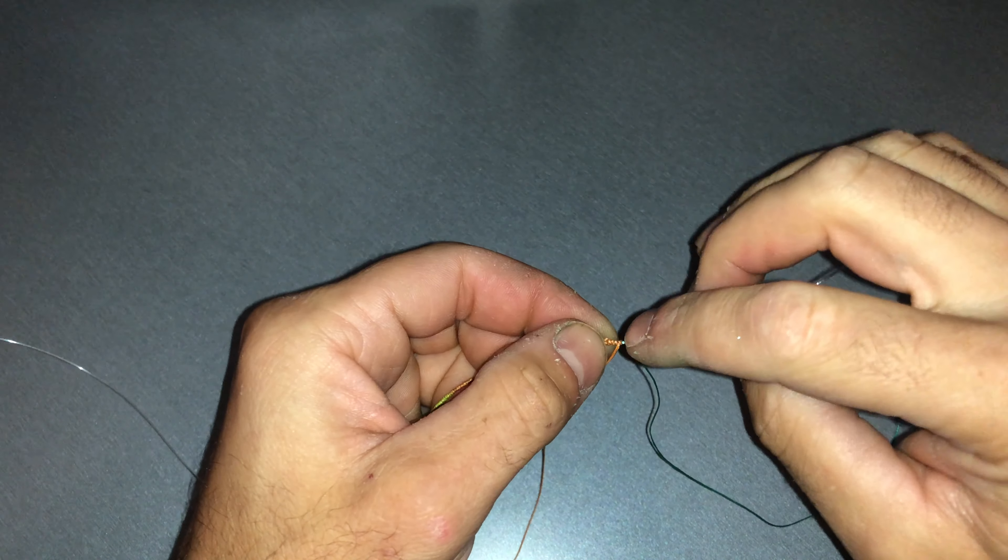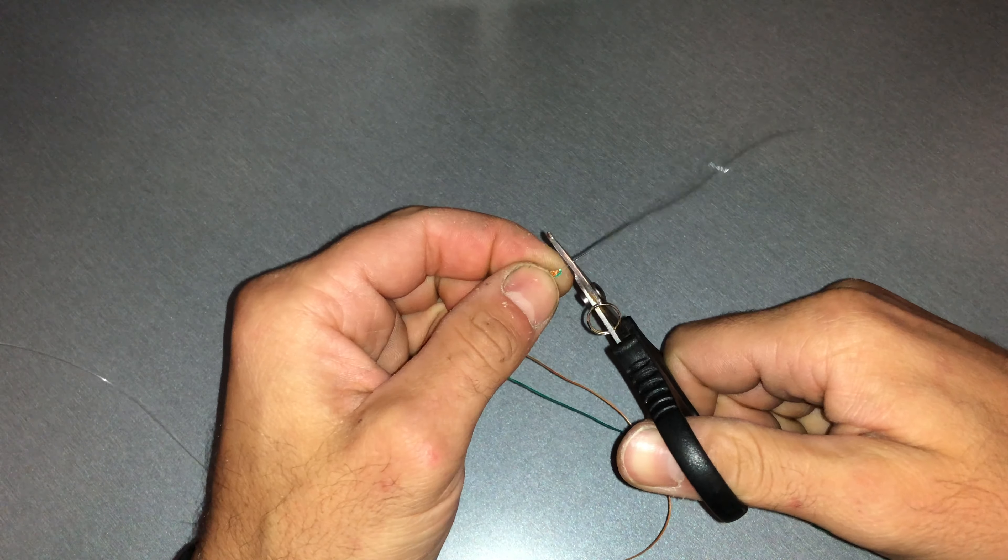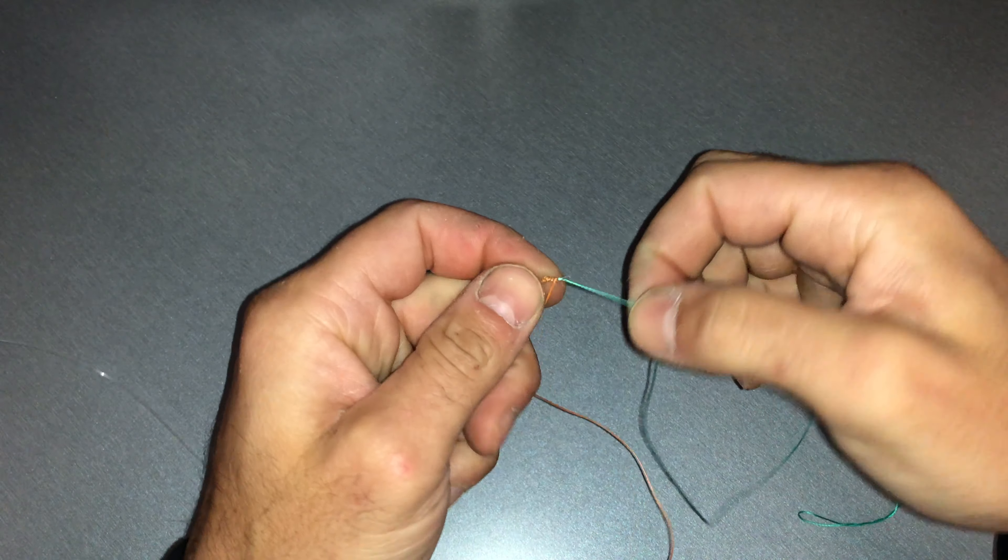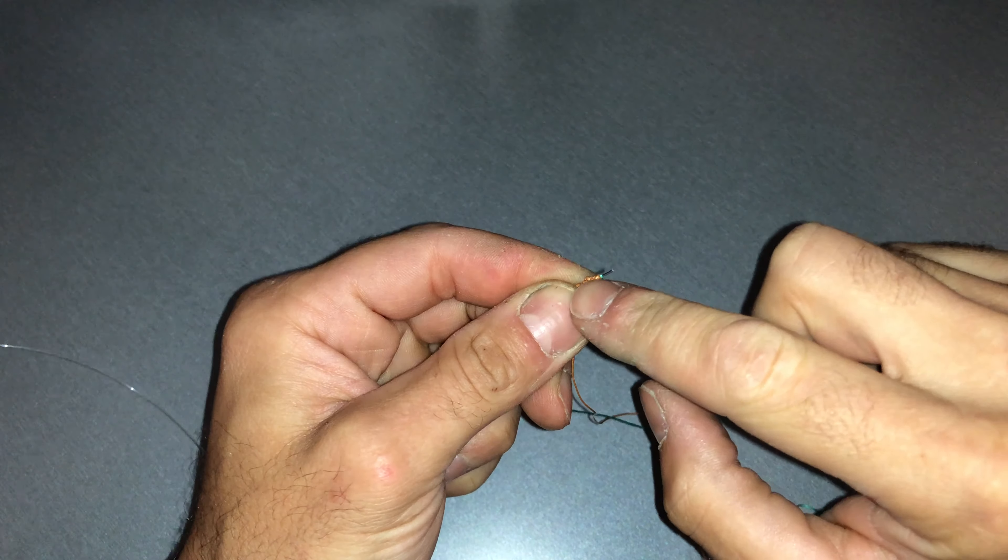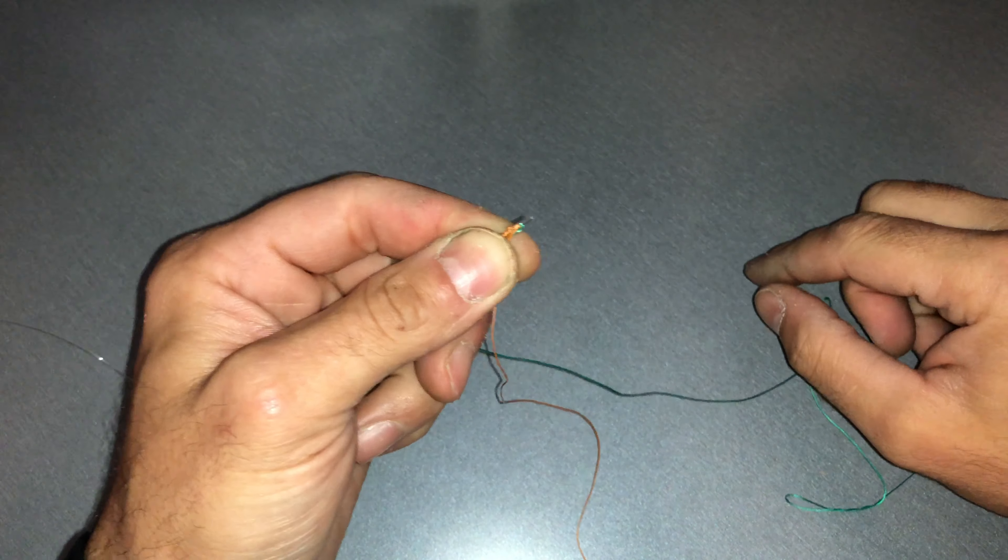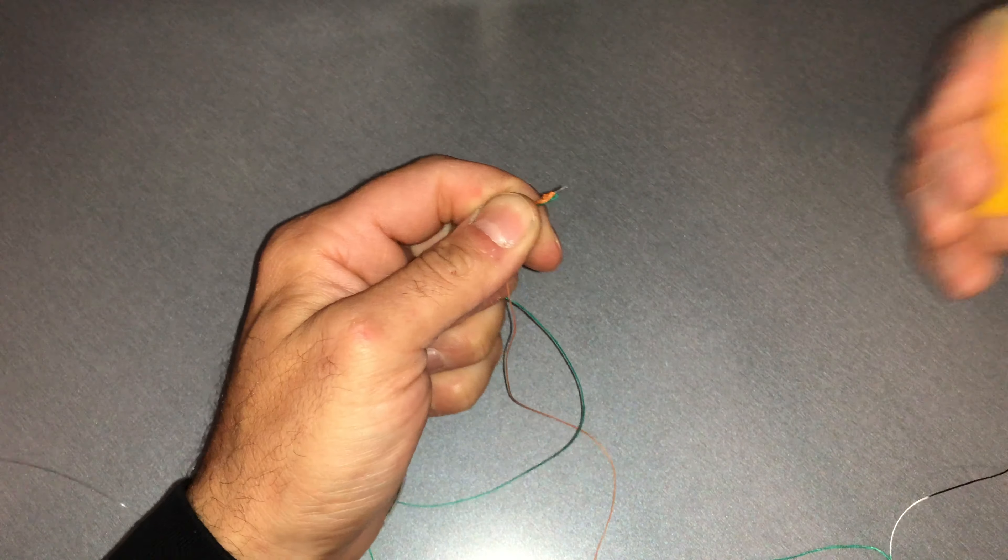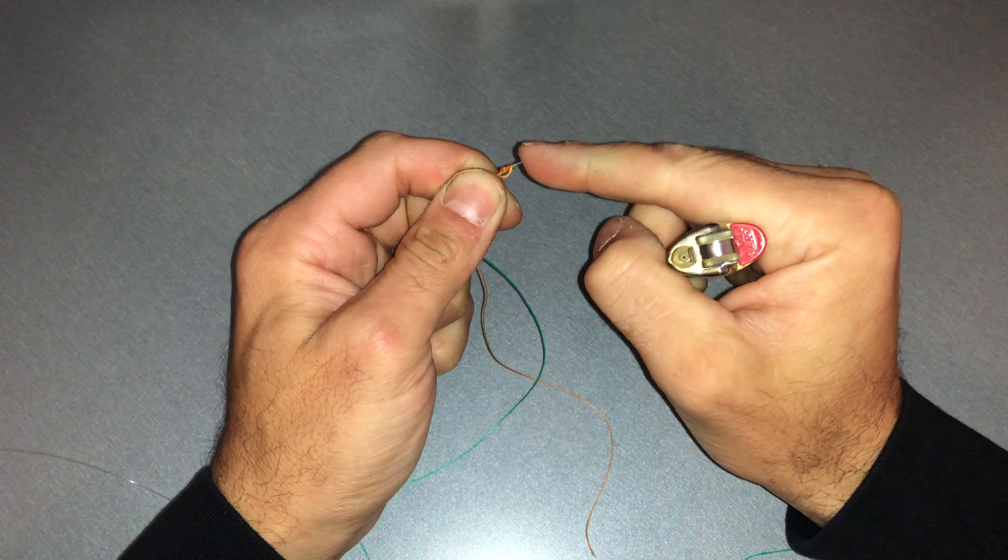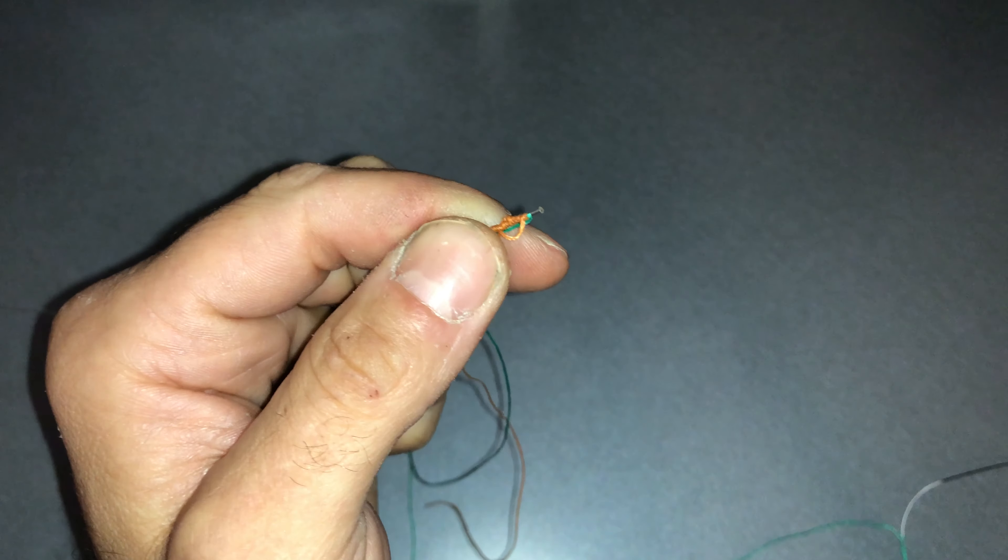Okay guys, so once we've done about eight to ten half hitches, we can then trim this tag end back. So if you leave about five mil there, and then we can lubricate this part of the braid so that when we burn this leader material back it's not gonna damage any of the braided lines. So we'll lubricate that. Okay, grab our lighter, burn that back being very careful. Give it a bit of a tap, form that little bit of a mushroom there, and that is just going to hold the rest of the half hitches together.